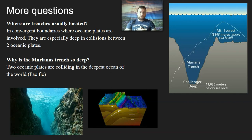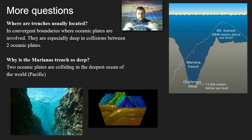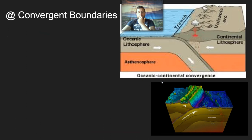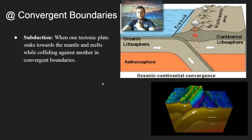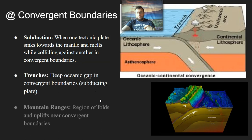The Marianas Trench is the deepest point on Earth's surface and the closest you can get to the mantle in the Pacific plate because it is a very deep gash. The unique features you're only going to see in convergent boundaries are subduction, trenches, and mountain ranges.